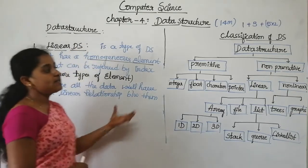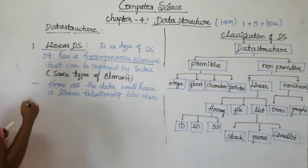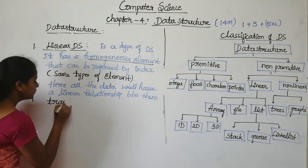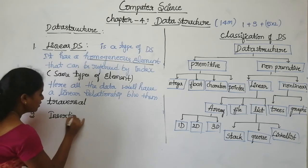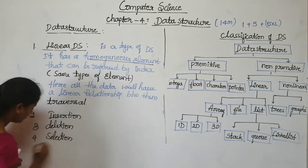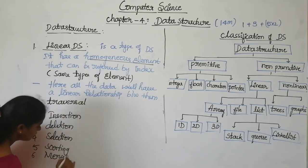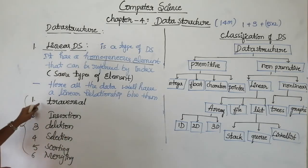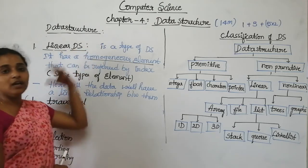There are various operations performed on this linear data structure, similar to primitive data structure. The first one is traversal, the second one is insertion, the third one is deletion, the fourth one is selection, the fifth one is sorting, and the sixth one is merging. These six operations are performed on the linear data structure.